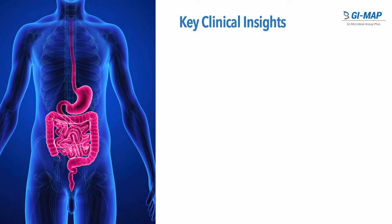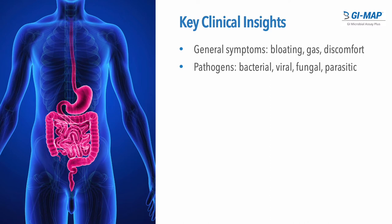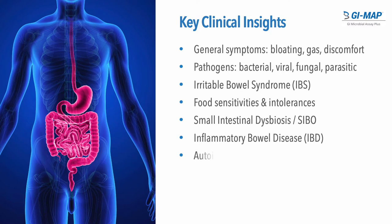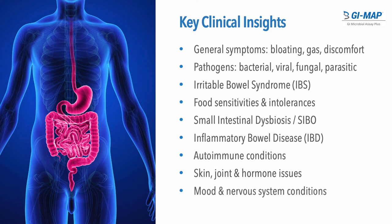In terms of clinical insights, GI Map provides practitioners with important clinical insights into common GI scenarios such as general gastrointestinal symptoms including bloating, gas, and discomfort; pathogenic infections involving bacteria, viruses, fungi, and parasites; irritable bowel syndrome; food sensitivities and food intolerances; small intestinal dysbiosis including SIBO; inflammatory bowel disease; autoimmune conditions; and extra-intestinal conditions such as skin, joints, hormone balance, and mood disorders.